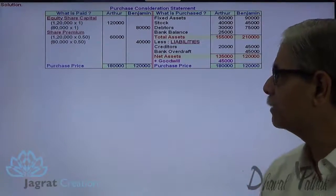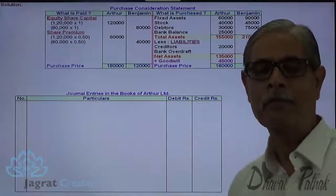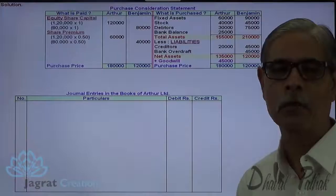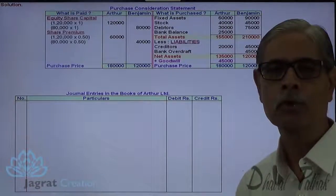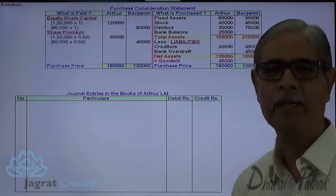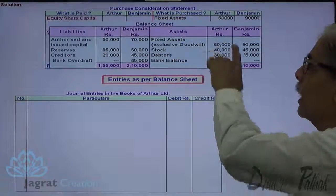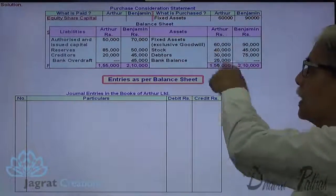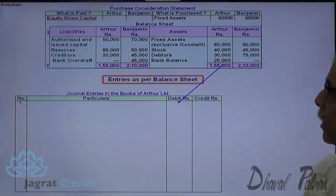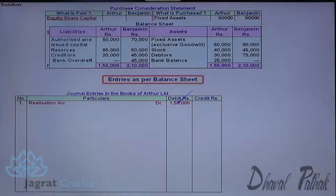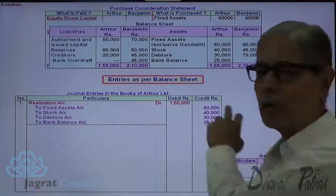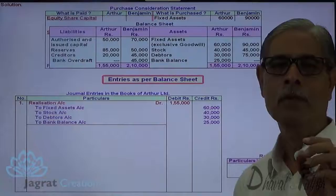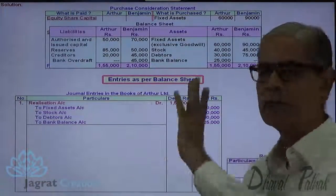Now I will write journal entries in the books of Arthur Ltd., which is being closed down. All assets and liabilities transferred to the new company are transferred to realization account, and those transfer entries are made from the balance sheet details. All assets from Arthur Ltd.'s balance sheet are transferred to the debit side of realization account: Realization Account Dr. 1,55,000 — to fixed assets, to stock, to debtors, to bank balance. Narration: being all assets sold to new company transferred to realization account.